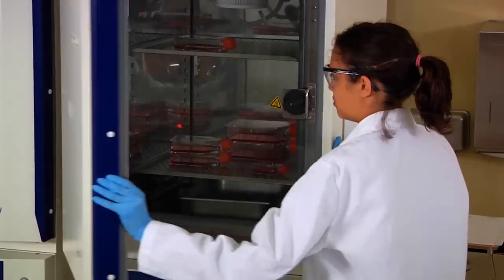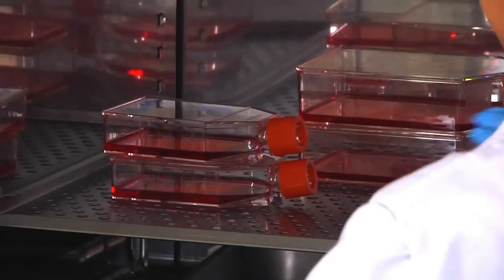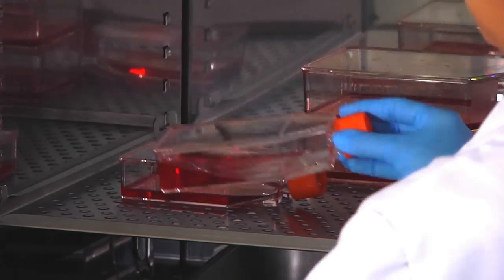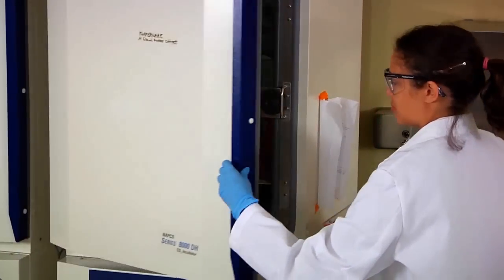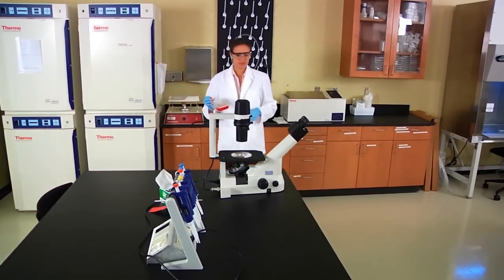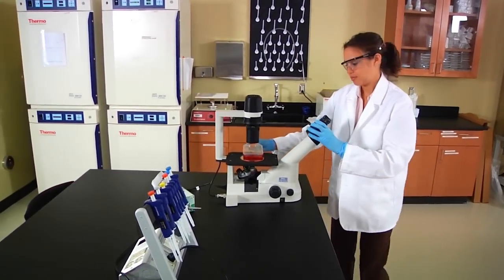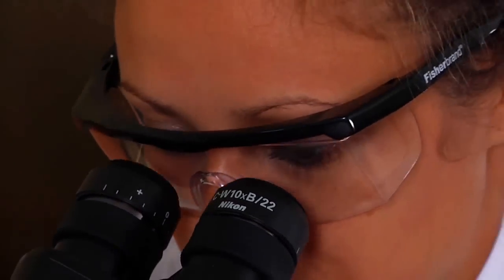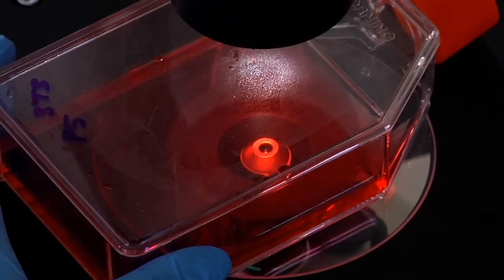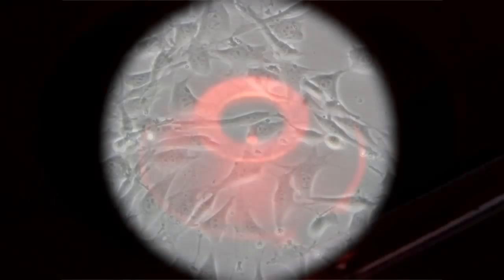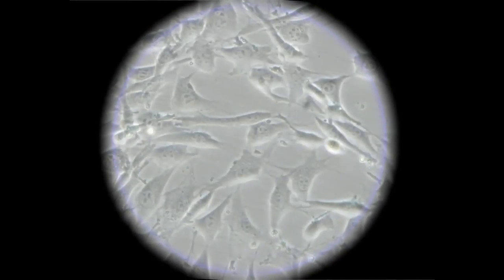To begin, remove the cultured cells from the incubator. Visually inspect the cells to see if there is any change in pH, which can be detected by a discoloration of the indicator phenyl red. Examine the cell culture under an inverted microscope. Look for any signs of contamination or unhealthy cells. These cells look healthy.